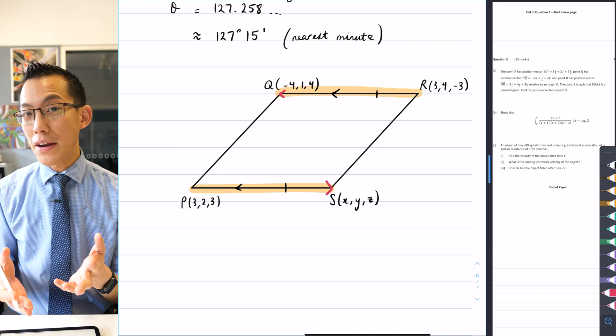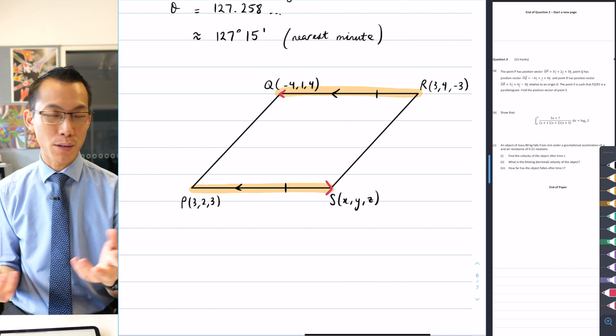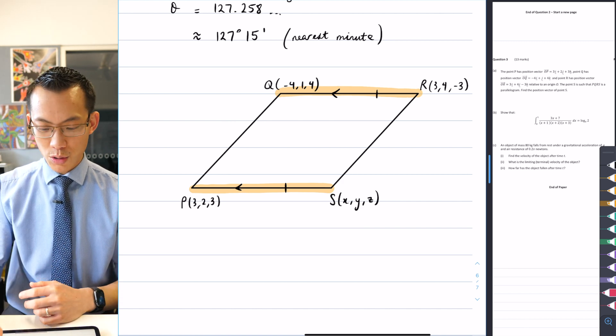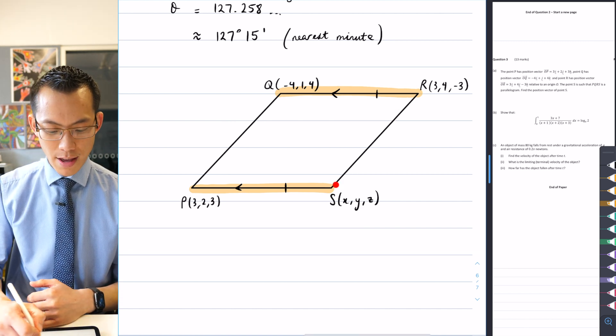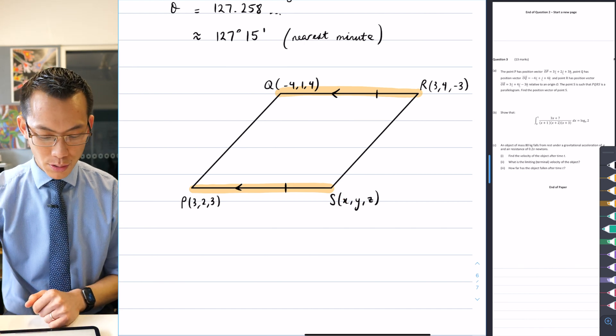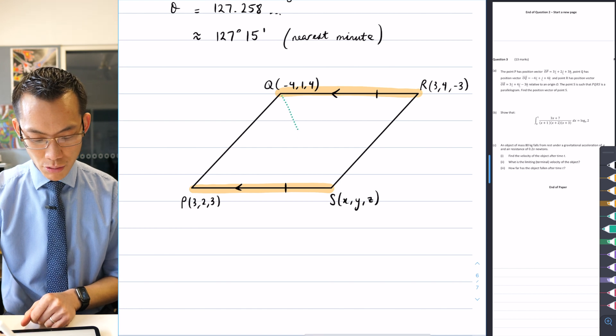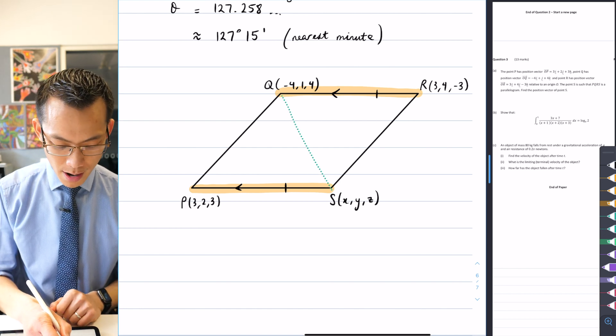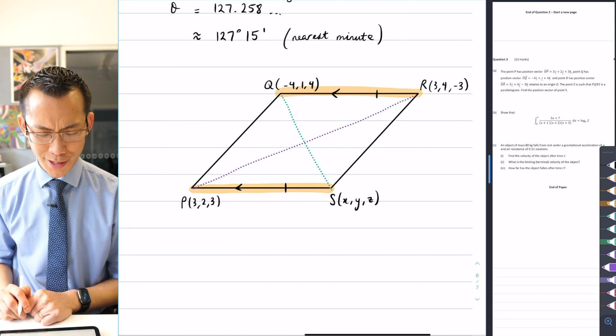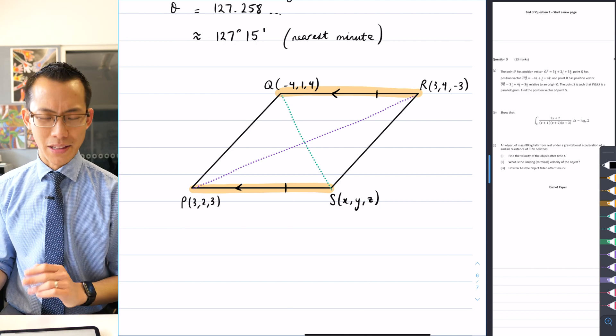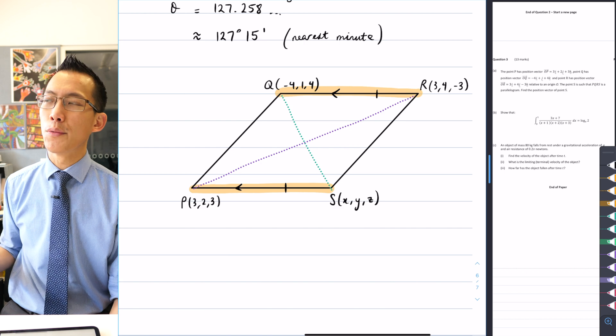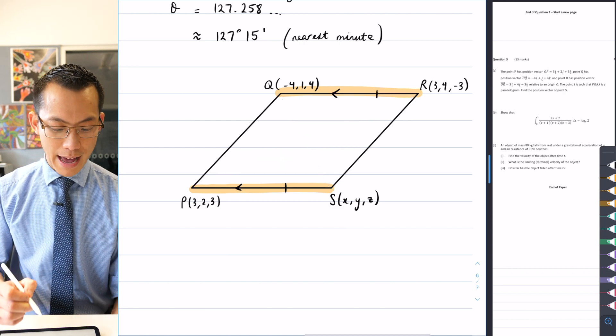So therefore, if you equated these, you would have got the wrong X, Y, and Z because you're comparing the wrong two vectors. Other students still, they compared the wrong two sides, so they might have compared like this one and this one, which were adjacent, not parallel, not opposite to each other. Like I said, this would have been easily avoided if you just drew a diagram like so.